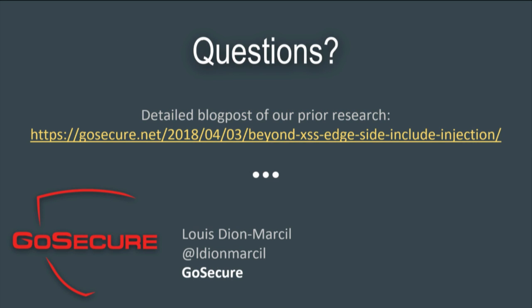There's a lot of research to be done with ESI injection. We documented this in April at our research URL. We analyzed about half a dozen ESI engines — including Akamai, WebSphere, Varnish, Fastly, and Squid — and found a whole range of bugs: denial of service with Squid, XSS filter bypass for Chrome, and more. If you go looking for more ESI bugs, I think you'll find a lot of them.